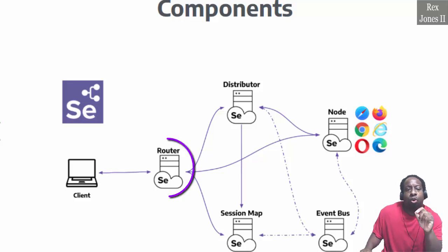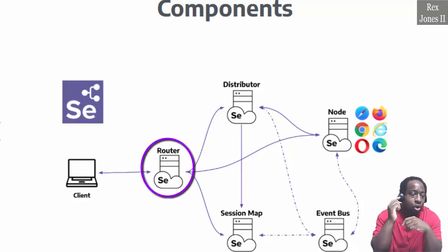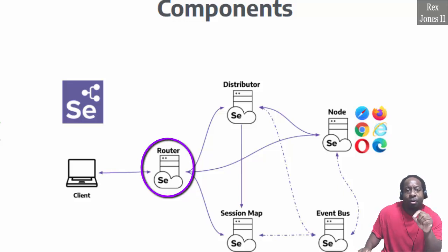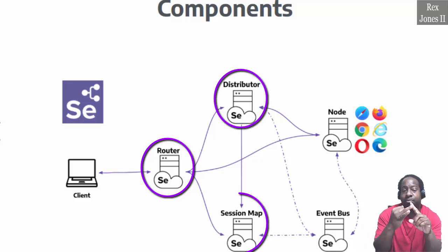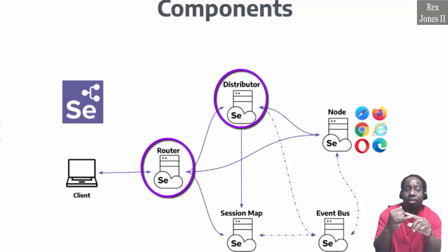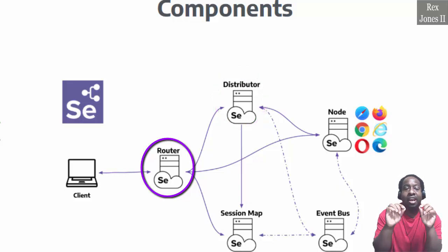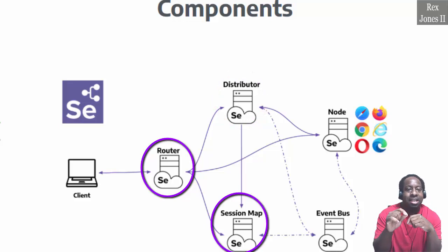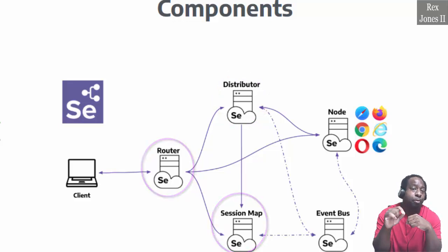The router's role is to listen for a session request. We see the router has an arrow pointing to the distributor and pointing to the session map. If it is a new session request, then communication starts between the router and distributor. If the session request already exists, then communication is between the router and session map.